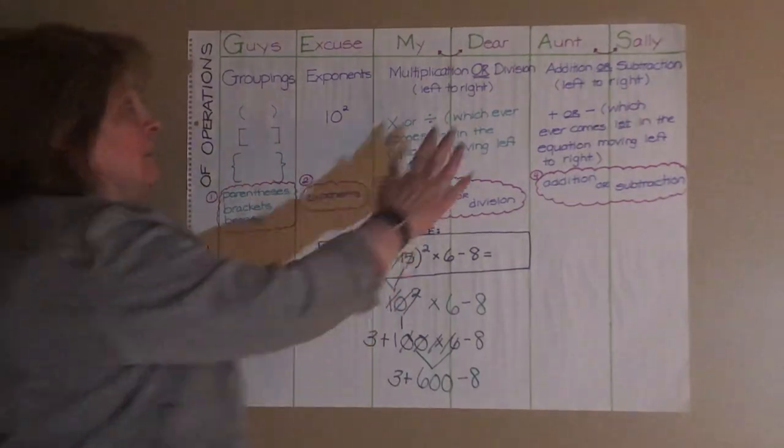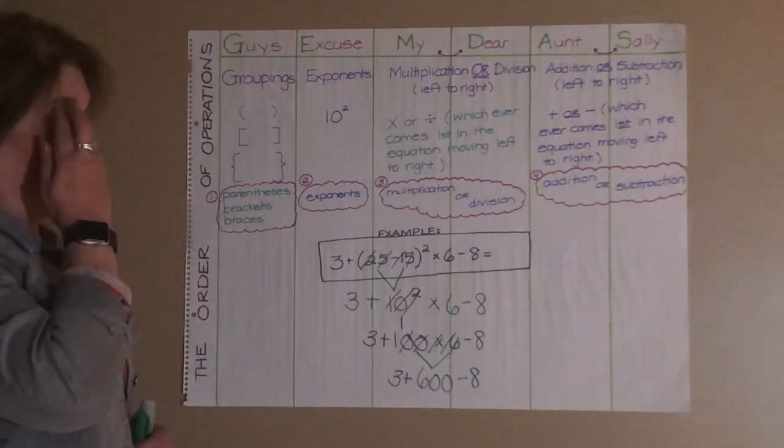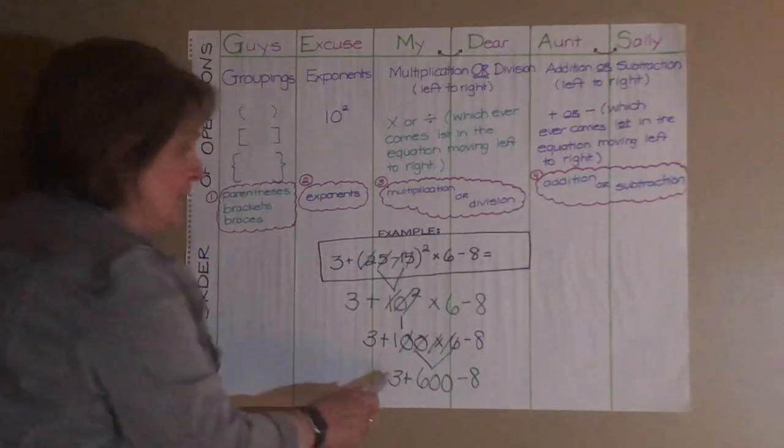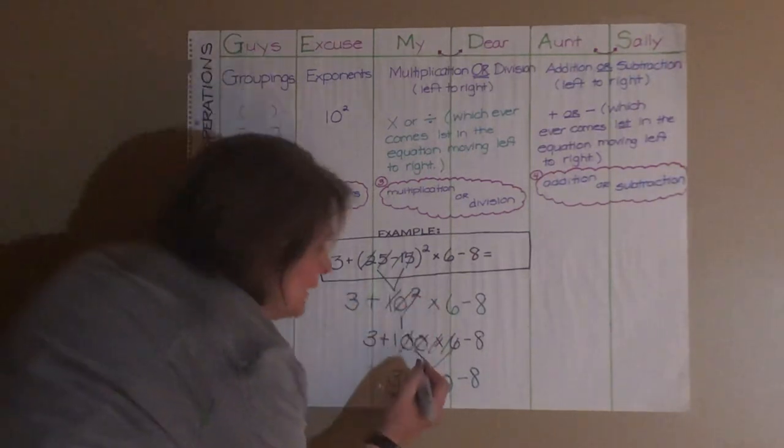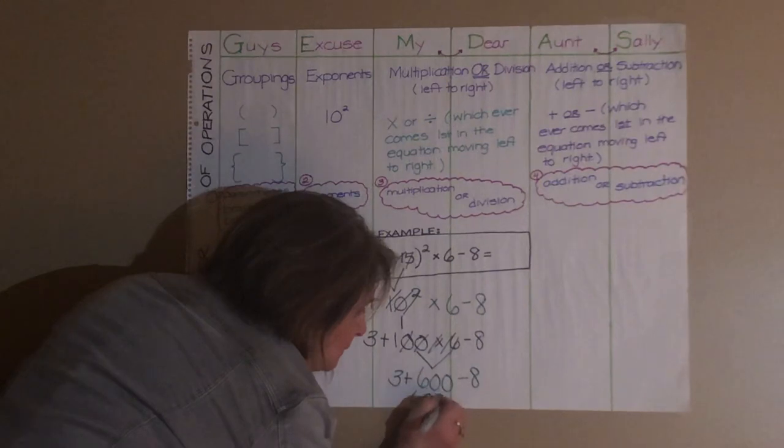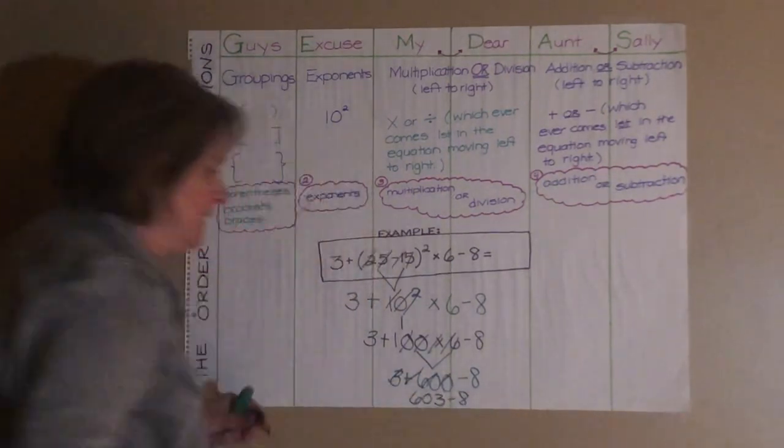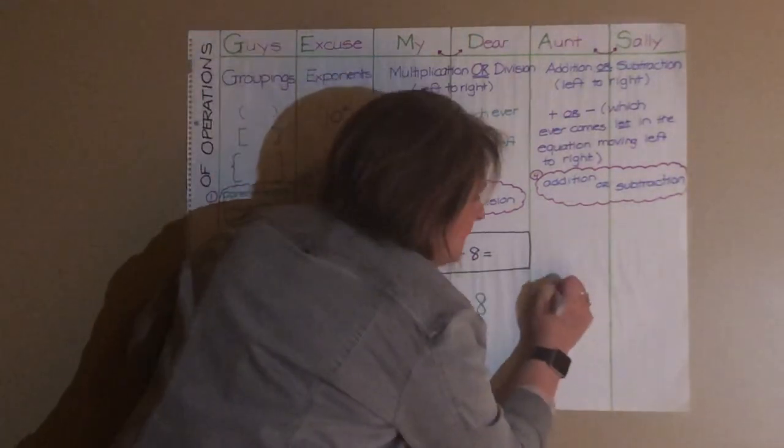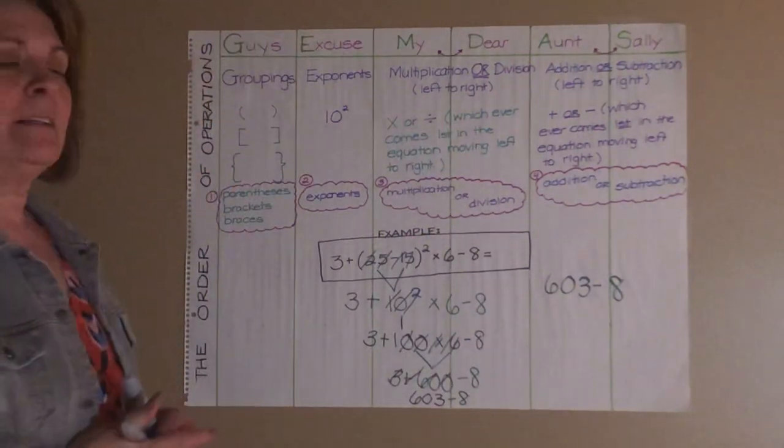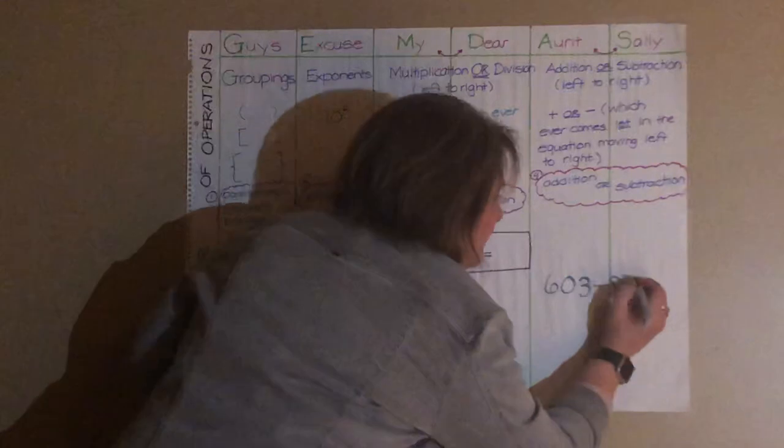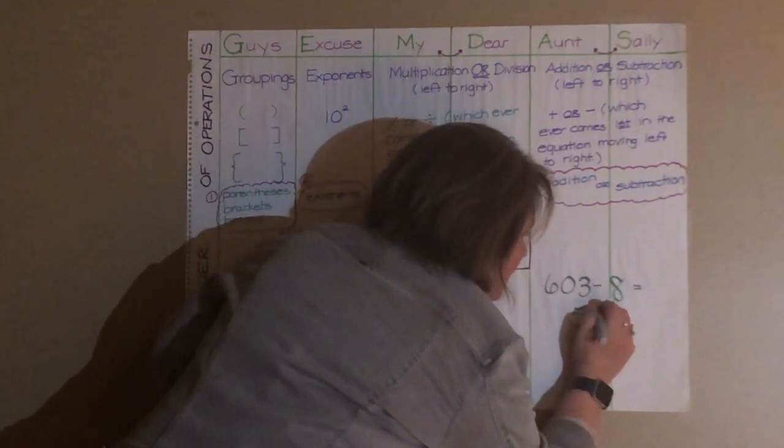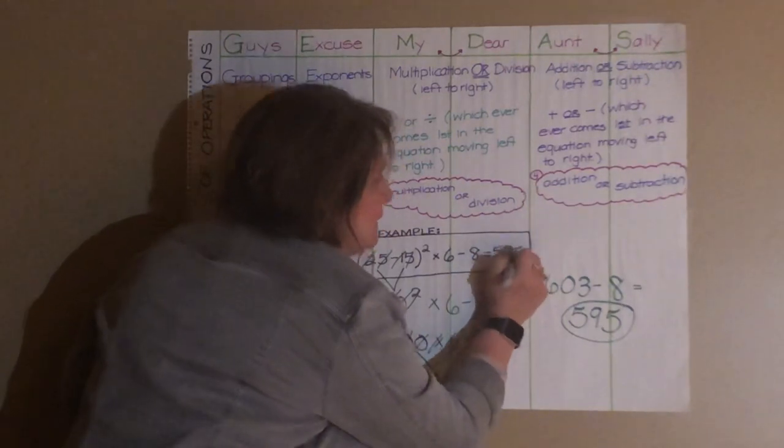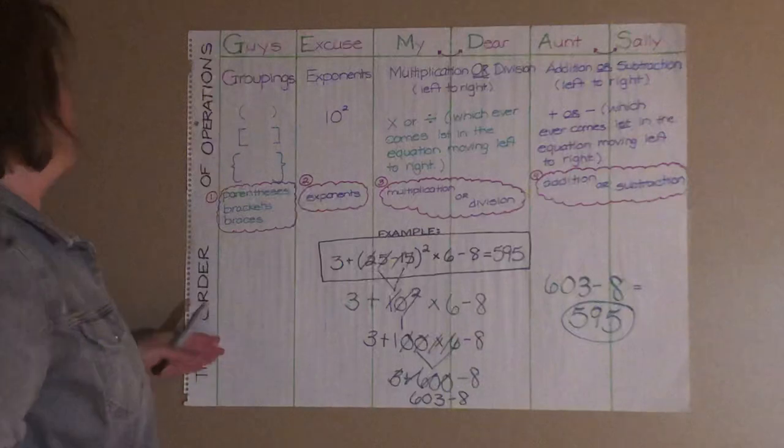Now, we have addition or subtraction. We have both in this equation. But again, it's addition or subtraction, whatever comes first, left to right. So in this case, the addition comes first, and 3 plus 600 is 603, and then minus 8. So now there's only one thing left to do, and that is 603 minus 8. And if you do that math, you come up with 595. So 595 is the answer to this equation if you follow the order of operations.